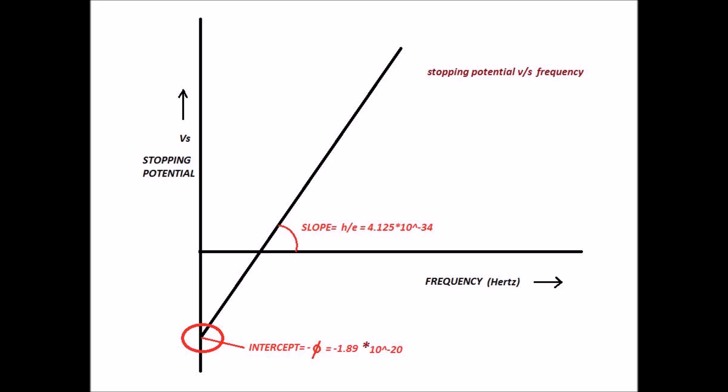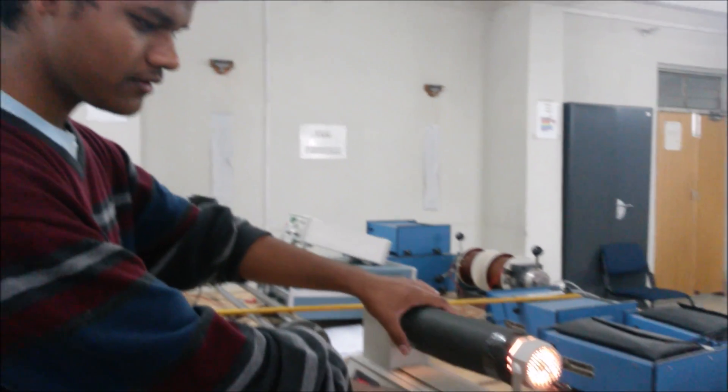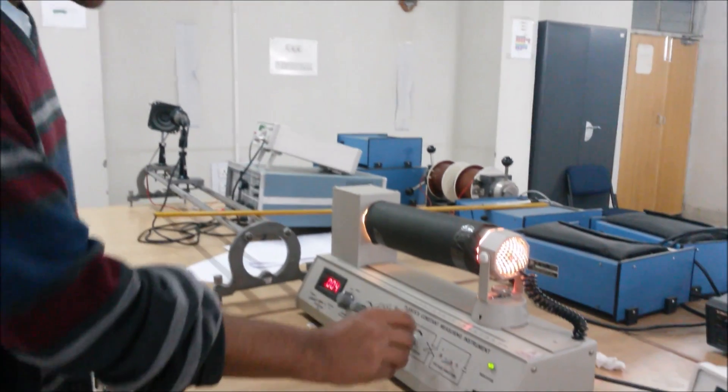Similarly, calculate this for every filter of different wavelengths. The observed graph is a straight line which satisfies the equation: Vs = (H × μ / E) minus work function, whose slope is equal to H by E.